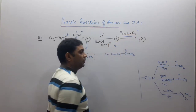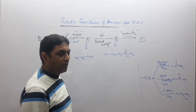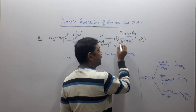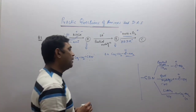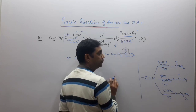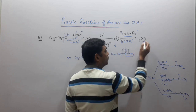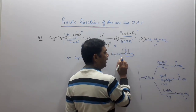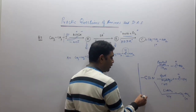If NaOH and Br2 appear on the reaction arrow and the previous reactant is an amide, that means Hofmann bromamide degradation reaction has occurred. In Hofmann bromamide degradation, the CO group is removed (as CO2/CO3²⁻ form), giving C2H5NH2 (1° amine with one less carbon, N-1 carbon). This is how ABCD questions are solved.